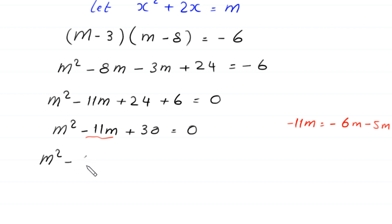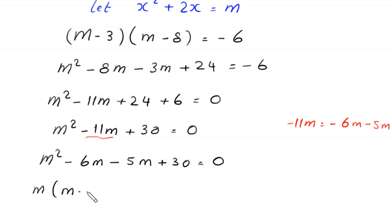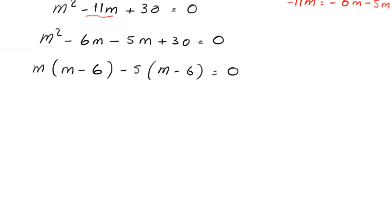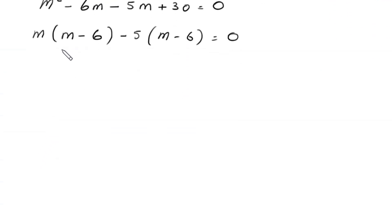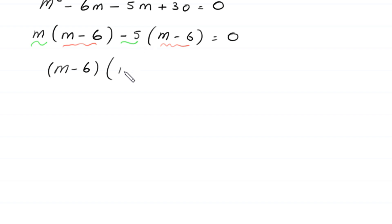So this becomes m squared minus 6m minus 5m plus 30 is equal to 0. From the first two terms we can factor out m, giving m times the bracket m minus 6. From the last two terms we can factor out negative 5, giving negative 5 in bracket m minus 6, is equal to 0. As you can see, m minus 6 is a common factor, so we factor it out, giving m minus 6 times m minus 5 is equal to 0.